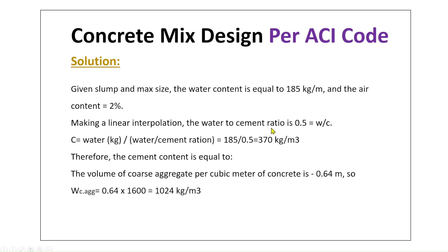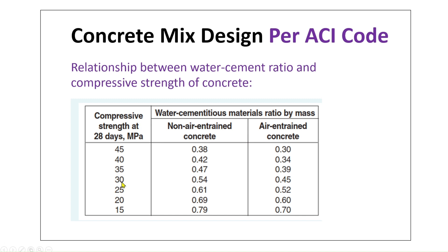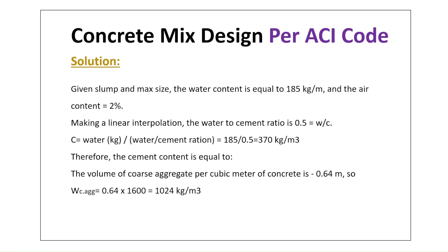Using linear interpolation for the water-to-cement ratio based on FC' = 33.5 MPa: from the table, at 30 MPa the ratio is 0.54, and at 35 MPa it is 0.47 for non-air-entrained concrete. Interpolating at 33.5 MPa gives a water-to-cement ratio of 0.50.